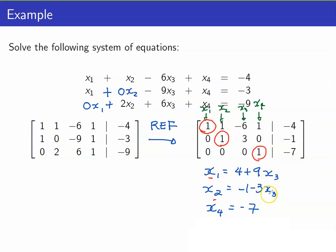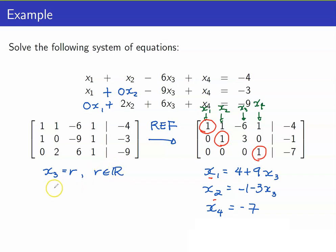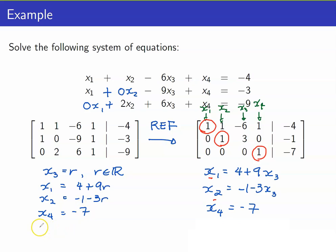What do we mean by free variables? It is simply saying that x3 can be any real number. It also means that the other variables would be expressed in terms of your free variable. If you have basic variables, the basic variables would correspond to your pivot columns. They will always appear exactly once, whereas the free variable — in this case x3 — will appear more than once. So what would be a solution to your system of linear equations? If we write x3 to be equal to r, where r is a real number, your x1 would be 4 plus 9r, x2 is negative 1 minus 3r, and x4 is equal to negative 7.